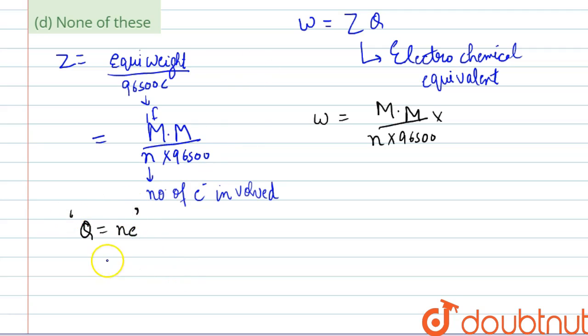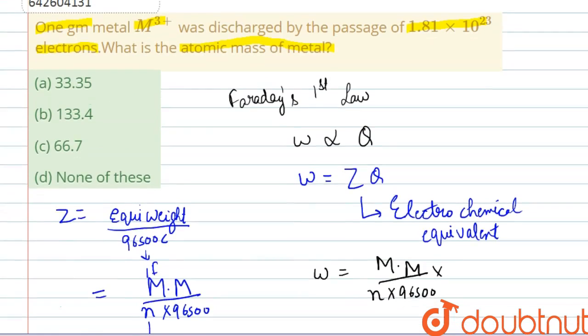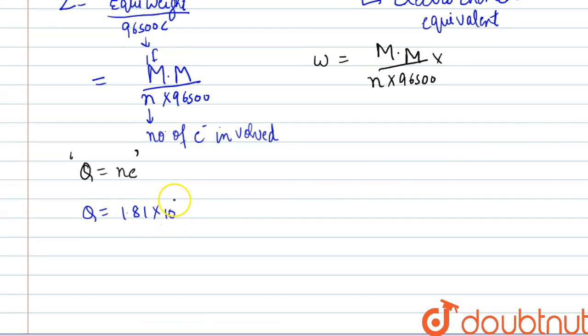Here e is the charge on one electron. So we will find the value of q by this, n is the number of electrons. So n is given as 1.81 × 10²³, and we know that charge on one electron is 1.6 × 10⁻¹⁹. So this will be the value for q.